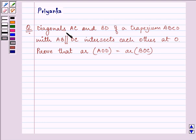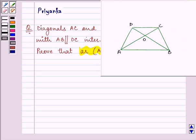The question to be discussed is diagonal AC and BD of a trapezium ABCD with AB parallel to DC intersect each other at O. Prove that area of AOD is equal to area of BOC. Now this is the figure which we need to refer.